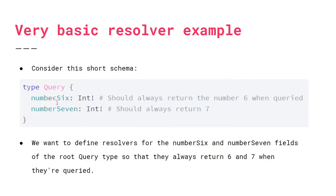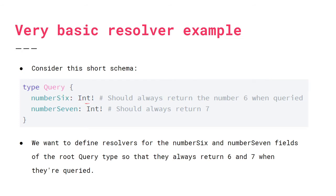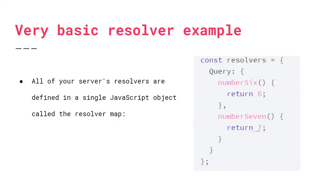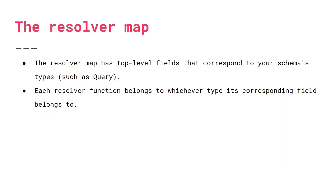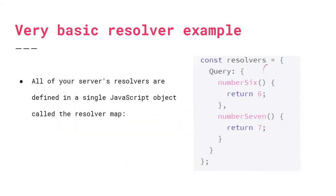In your schema you have type Query, so inside the resolver map you define Query and define resolver functions for all the fields in that type. We need to tell Apollo Server how to actually return a six. This is a very simple function — all it does is return six — and Apollo Server maps that six and returns it back when called. Same thing for seven. The resolver map has top-level fields that correspond to your schema's types, and then you define the resolver function for each field.